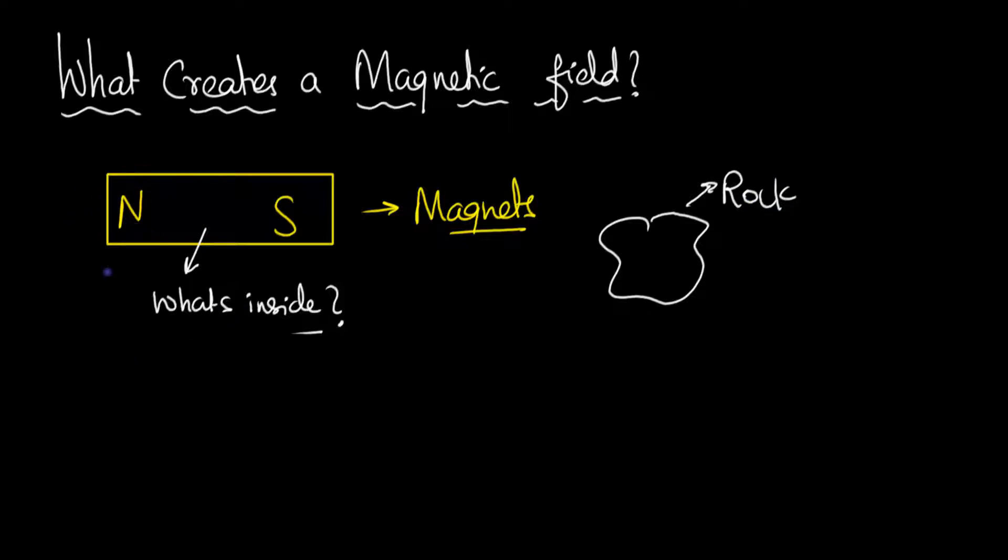Or you could say no, magnets have these things called poles. They have a North Pole and they have a South Pole. But these are names that we've given, these are not really the answers. So we can again ask why does a North Pole create a magnetic field? It's not the why, it's like what creates the magnetic field inside, okay?